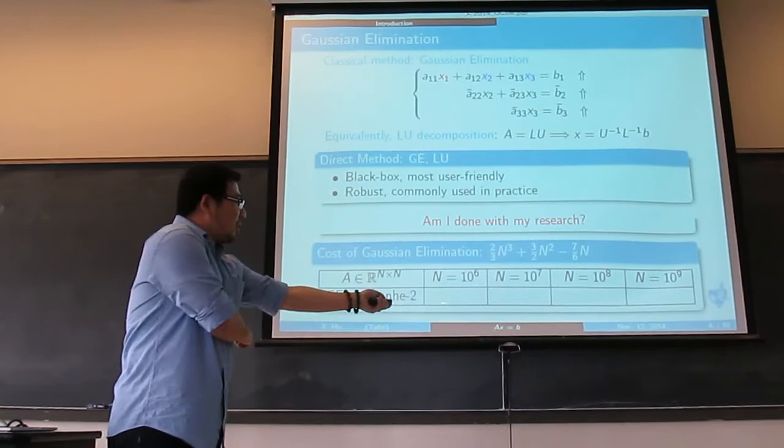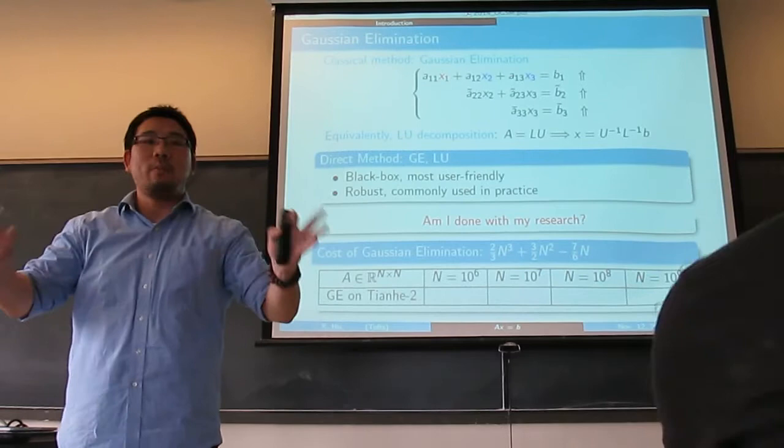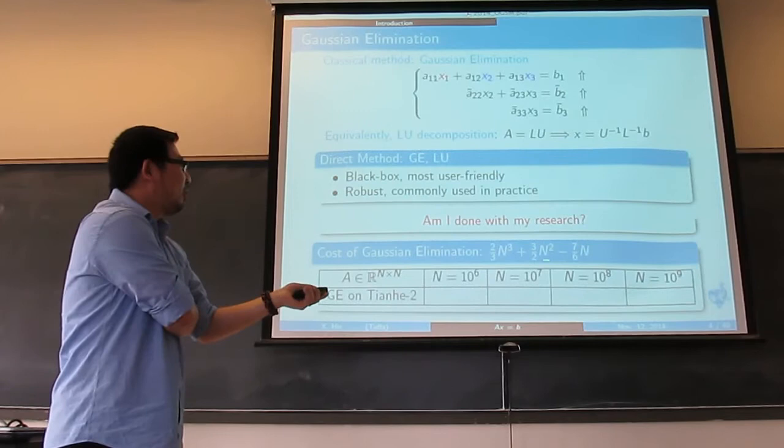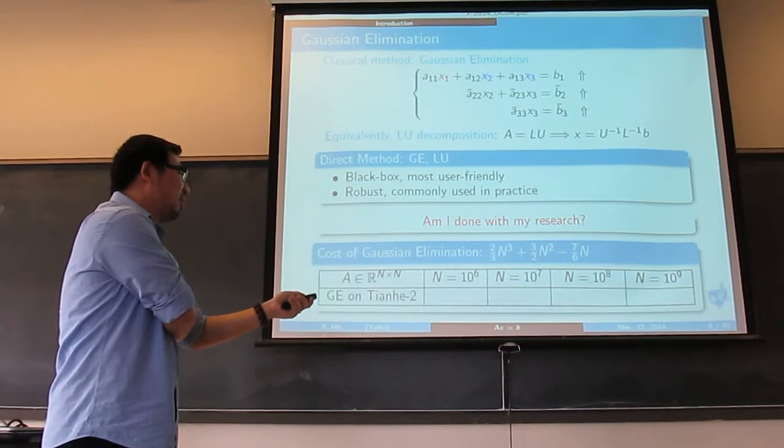If you compute — guess how many times you need to solve? The size is 10 to the 6, so it's 1 million. I solve a 1 million by 1 million system. How many times does it need to solve the system on that supercomputer? That's the total operations you need. Basically, you plug in N equals 10 to the 6.